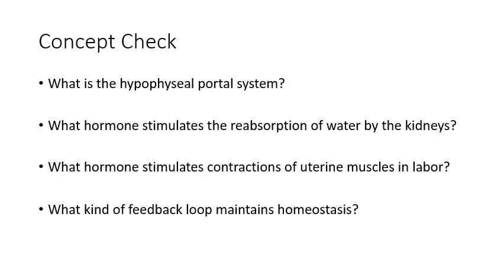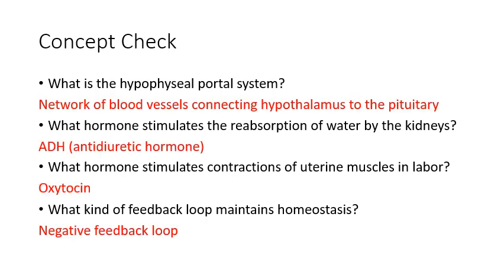Concept check: The hypophysial portal system is a network of blood vessels connecting the hypothalamus to the pituitary gland so releasing hormones can get directly to their destination. The hormone that stimulates reabsorption of water by the kidneys is antidiuretic hormone. The hormone that stimulates uterine contractions in labor is oxytocin. The type of feedback loop that maintains homeostasis is a negative feedback loop. I hope that was helpful — introduction to the endocrine system. Let me know if you have any questions.